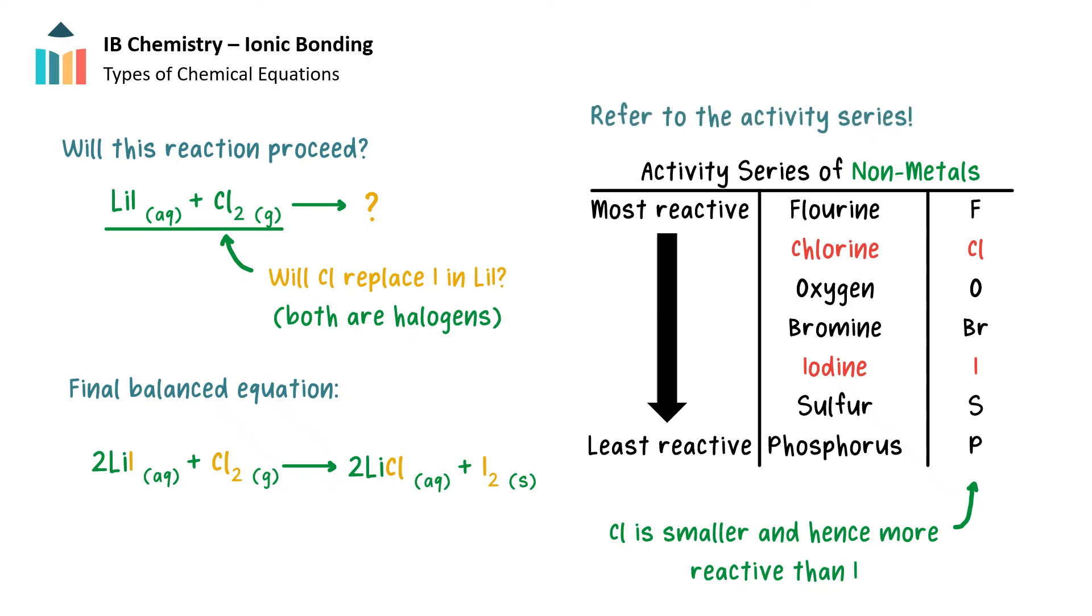We can consult the reactivity series for the nonmetals to see that chlorine is more reactive than iodine. Therefore, chlorine is more likely to gain electrons than iodine and want to be in an ion form within a compound. Additionally, we know this from our knowledge of the periodic table. Chlorine lies above iodine in the halogens group 17.